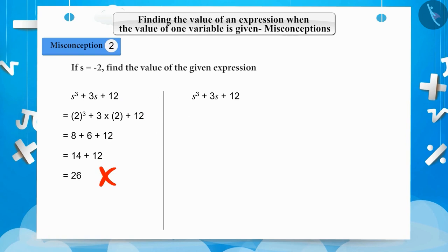Let's now see what will be the correct solution. By using s is equal to minus 2, we will get minus 2 cube plus 3 multiplied by minus 2 plus 12. Here, minus 2 cube is equal to minus 2 multiplied by minus 2 multiplied by minus 2 will be equal to minus 8. Now, we will get is equal to minus 8 plus minus 6 plus 12 is equal to minus 14 plus 12 is equal to minus 2. So, minus 2 is the correct answer.